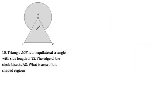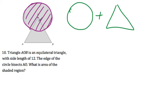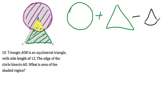This is a tricky question. The side length is 12 and the edge of the circle bisects AO, so we know that's 6 and 6. A common mistake is adding the circle area plus the triangle area directly — but that double-counts the overlapping region. Instead, we need the area of the circle plus the area of the equilateral triangle minus the small sector of the circle that overlaps.